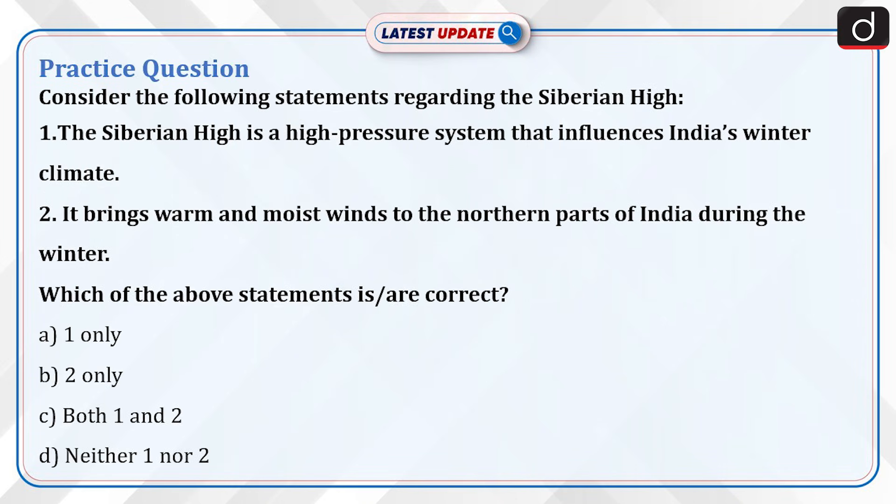Now it's time to do a practice question. Consider the following statements regarding the Siberian High. Statement 1: The Siberian High is a high-pressure system that influences India's winter climate. Statement 2: It brings warm and moist winds to the northern parts of India during the winter. Which of the above statements are correct? A. 1 only. B. 2 only. C. Both 1 and 2. D. Neither 1 nor 2.